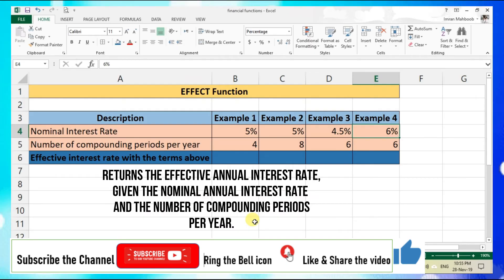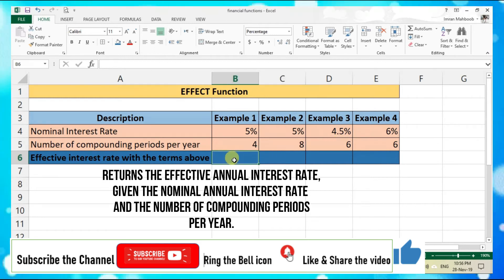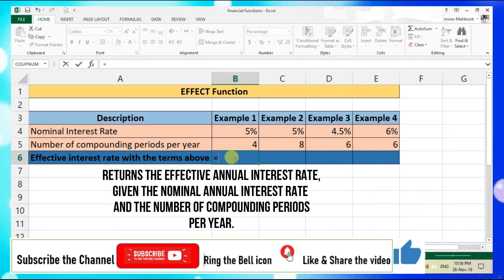Here we have four example scenarios. The nominal interest rate in first example is same whereas the number of compounding periods per year is different. And in example 3 and 4, the nominal interest rate is different and the number of compounding period per year is the same. Let's apply the function in example one.